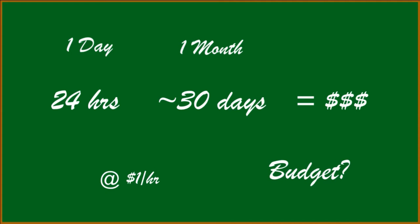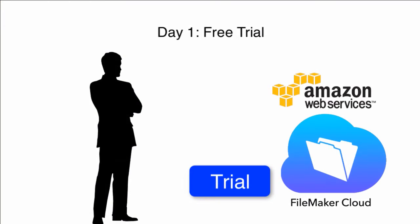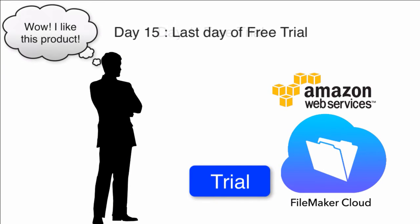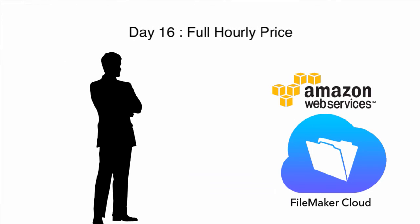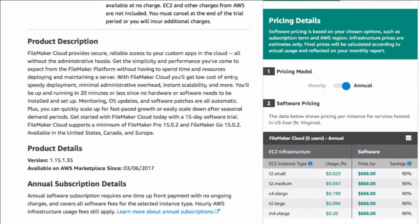A real fast way of blowing up your budget is to forget about the trial, or to decide that you like FileMaker but not go back and switch it to an annual basis. Once you buy it on an annual basis, a five-pack is going to be about $888 for the year — a whole lot less than $1 per hour. Forgetting that the trial rolls over to hourly is a great way to cause your budget a serious problem.